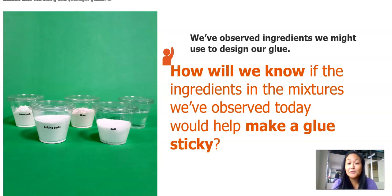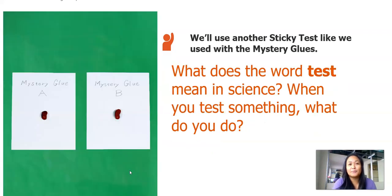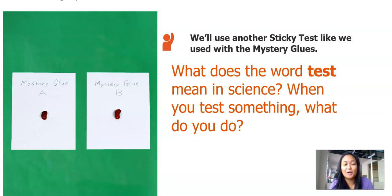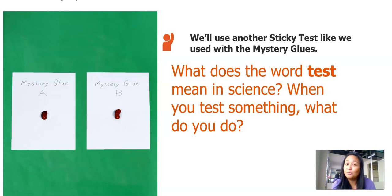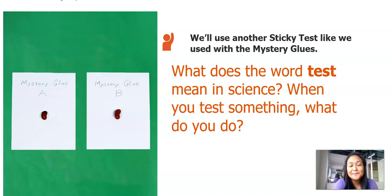My idea is that we will test them out using our sticky test. We'll do a similar test like what we did with the Mystery Glue A and Mystery Glue B, if you remember from a couple of lessons back. But I want you to get thinking: what does the word test mean in science? When you test something, what do you do? My idea is that when we test something in science, we're trying to see a certain property that it has.